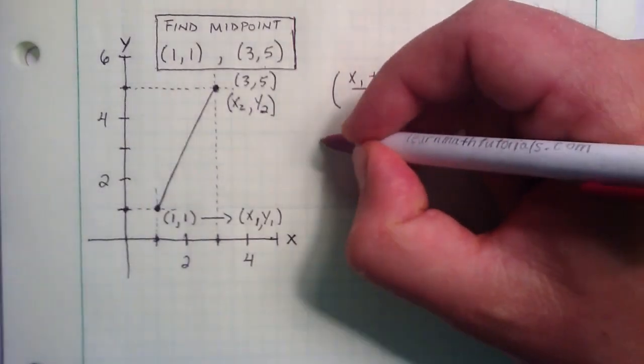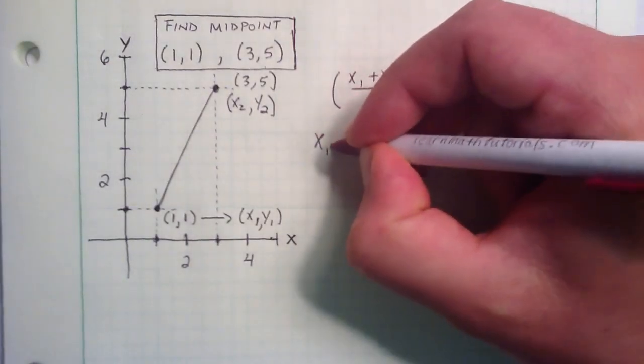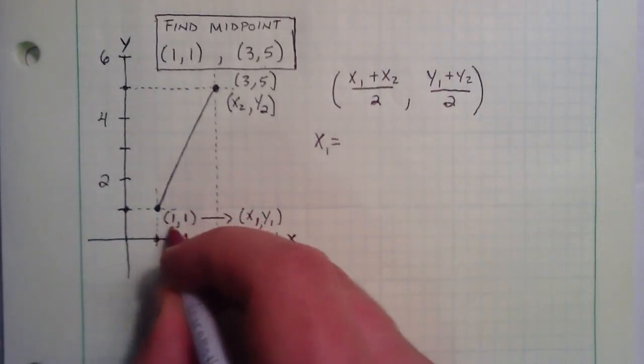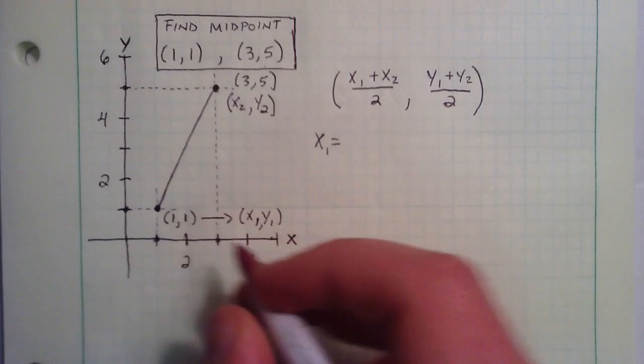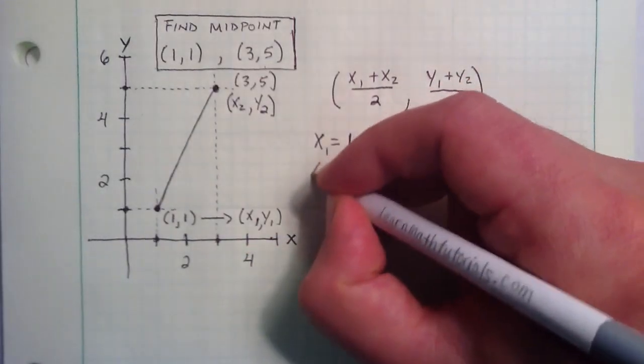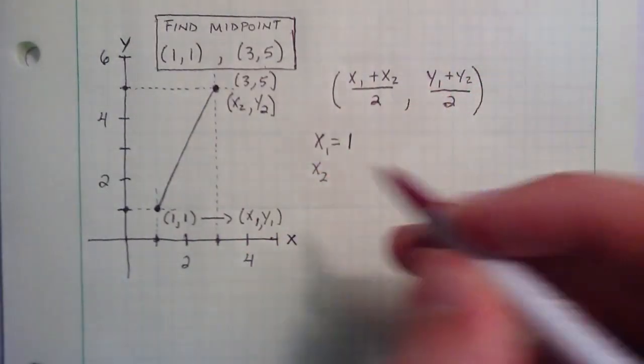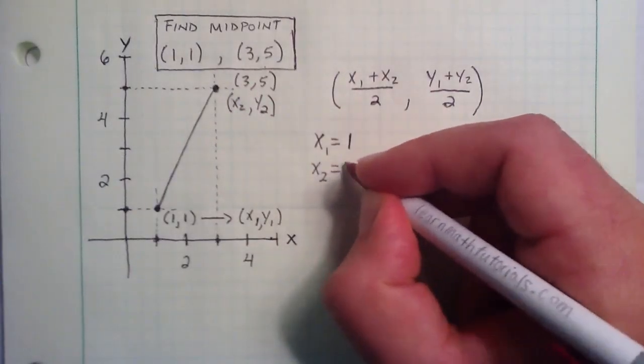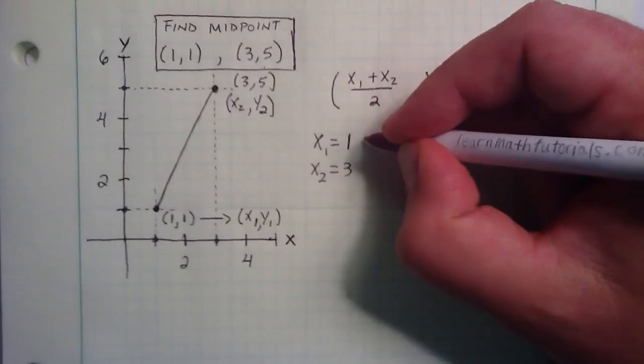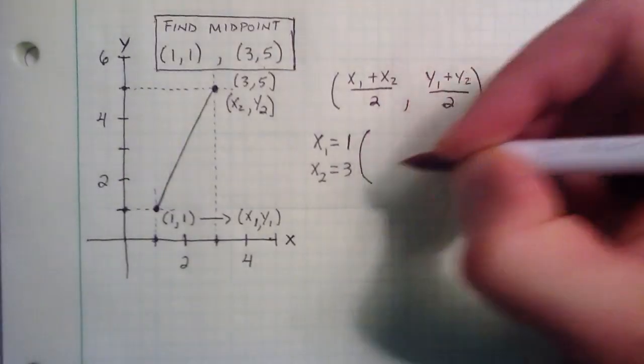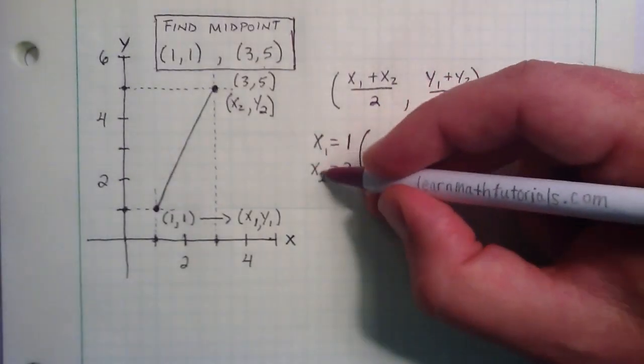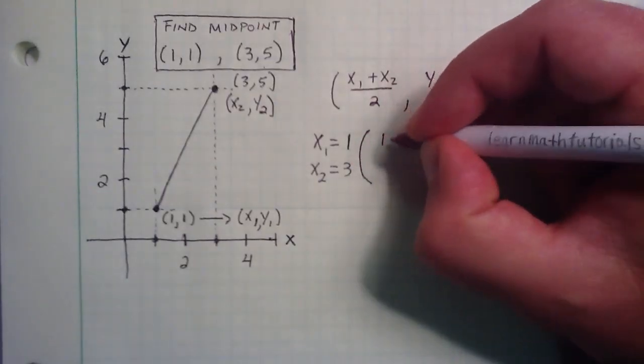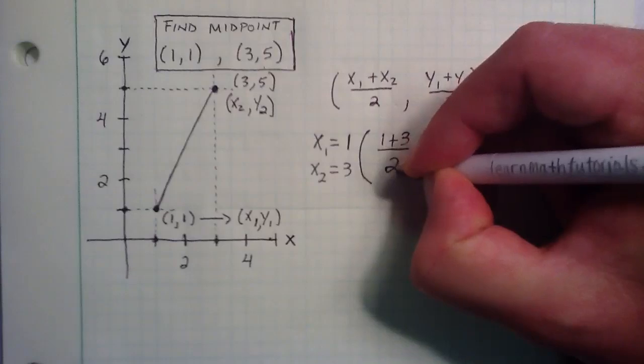So, let's go ahead and write down x1 here. Now, x1 is the left-hand side, or the x component, so it refers to the x component of this point, which is a 1. And x2 refers to the x component of this point, so that gives us the 3. So now we can build the x component of our midpoint. x1 + x2 is simply just 1 + 3, and then that's divided by 2.